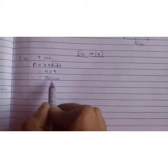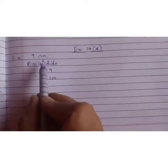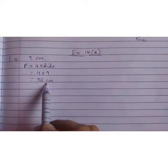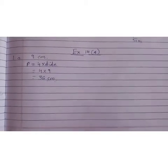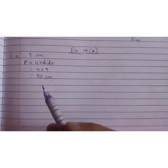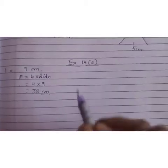In perimeter, whatever is written here, it may be centimeters, it may be meters, the same will come. Whereas in area, you have to write square centimeters, square meters and so on.